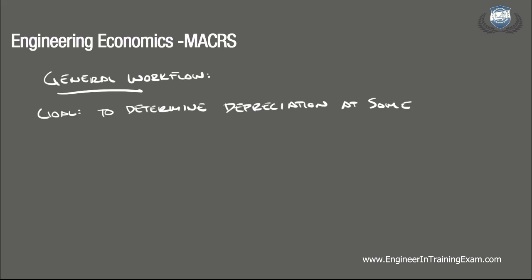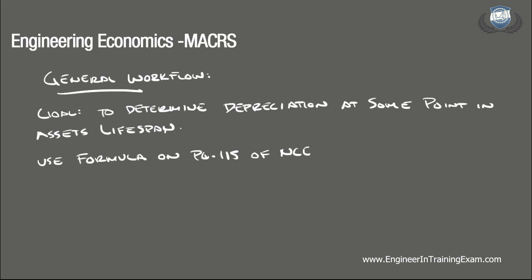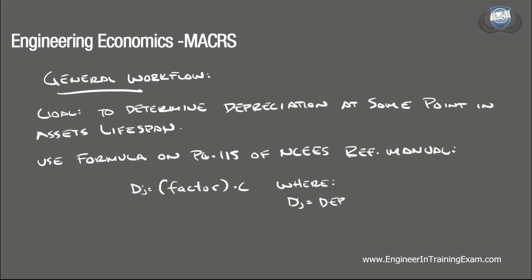So let's walk through the general workflow. The goal of a Modified Accelerated Cost Recovery System Depreciation problem is to determine the depreciation of an asset at a specific point during its lifespan. To determine the depreciation charge for any year within the useful lifespan, we can refer to the formula found on page 115 of the NCEES Supplied Reference Handbook, 8th Edition, 2nd Revision, for the Accelerated Cost Recovery System, which states that D sub J is equal to some factor times C, where D sub J is the depreciation in year J and C is the cost of the piece of equipment.